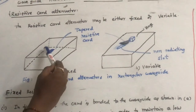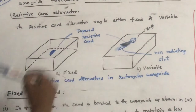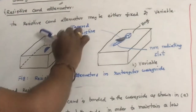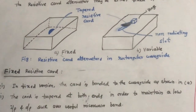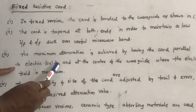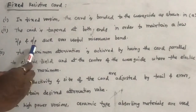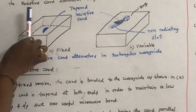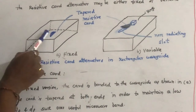The tapering is also done to minimize reflections when the wave is passing through it. The resistive cord absorbs a certain portion of the wave when the electric field is parallel to it. Maximum attenuation is achieved by placing the cord parallel to the electric field and at the center of the waveguide, where the electric field is maximum.